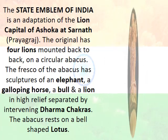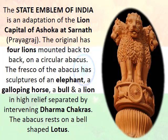The state emblem of India is the second national symbol, which is an adaptation of the Lion Capital of Ashoka at Sarnath, Prayagraj — that was Allahabad initially. The original has four lions mounted back to back on a circular abacus. In this figure, you are unable to see the fourth lion which is behind the one seen in front.